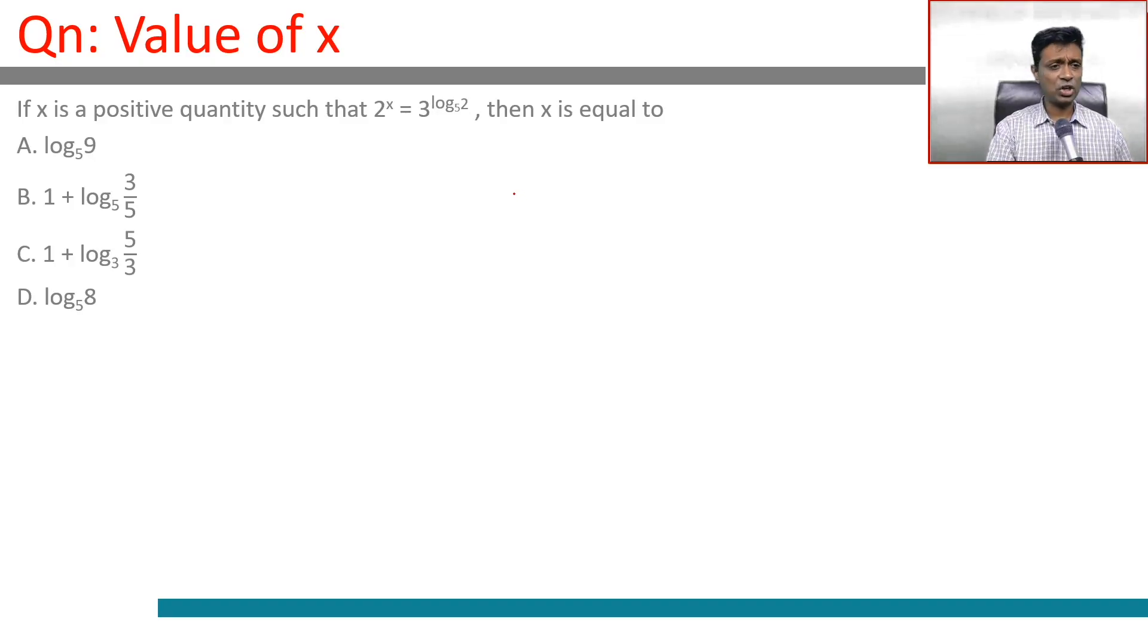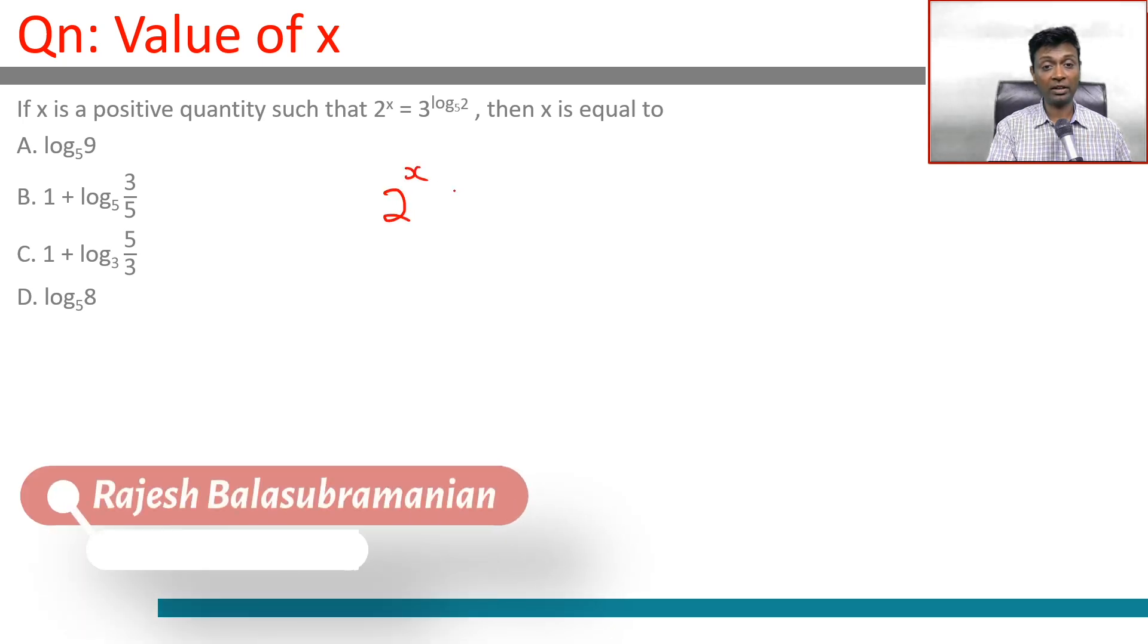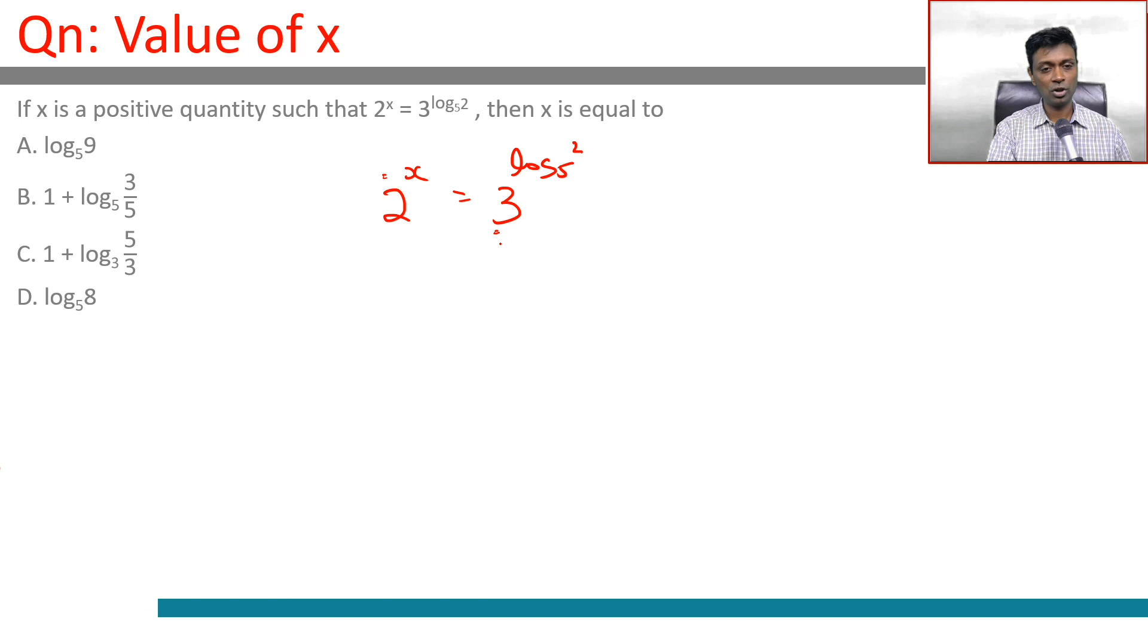Again, a wonderful question, very challenging question. So if x is a positive quantity such that 2^x equals 3^(log_5(2)), we're dealing with exponents and we're dealing with logs.